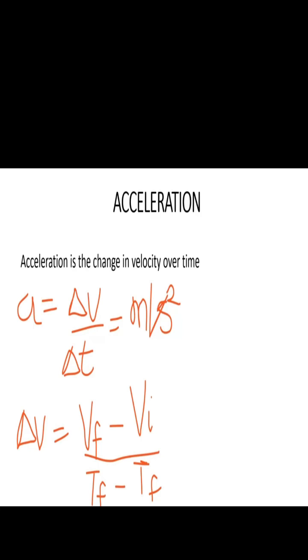So we always remember to note the change in velocity as the final velocity minus the initial velocity, the final time minus the initial time. And the unit is meters per second squared.